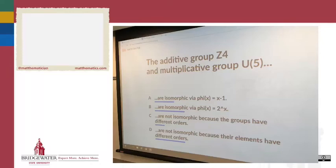When we first started this problem, I asked you to assess whether the additive group Z4 and the multiplicative group U(5) are or are not isomorphic. There was a variety of opinions. About half the class thought these were isomorphic for a couple of different reasons, and the other half said they're not isomorphic because elements might have different orders, or groups might have different orders.